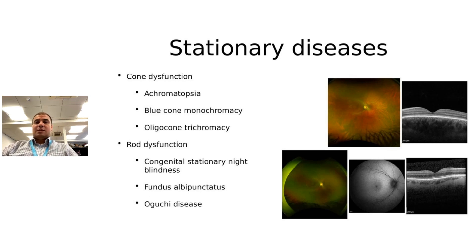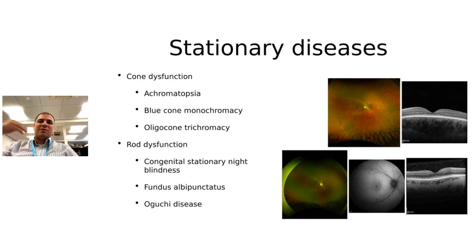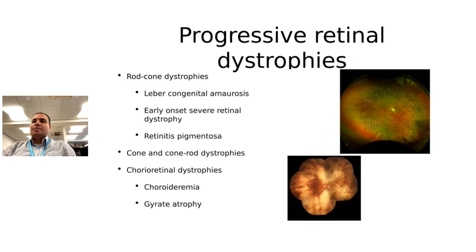Congenital stationary night blindness patients usually have a very normal-looking retina. Because it is an inner retinal disease — further down the pathway — you wouldn't expect any structural issues in the retina. For progressive retinal dystrophies, you can differentiate them by the system they affect. There are rod-cone dystrophies like Leber congenital amaurosis, early-onset severe retinal dystrophy, and retinitis pigmentosa. Retinitis pigmentosa is a type of rod-cone dystrophy, but not the only one.